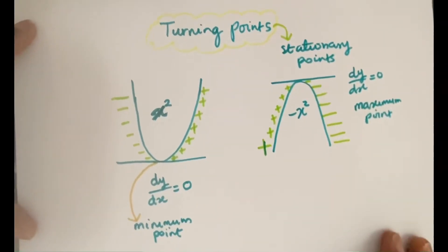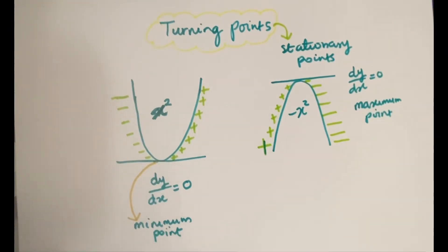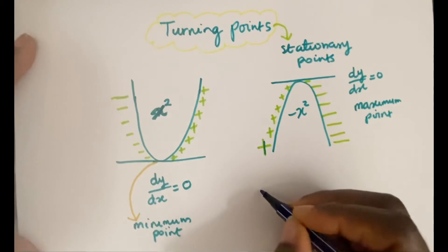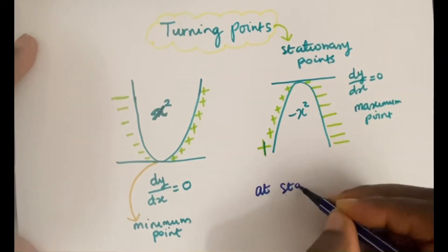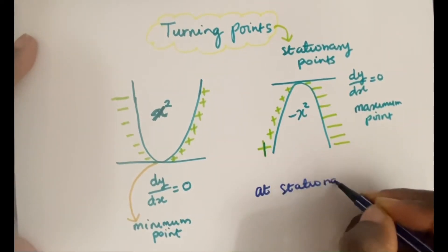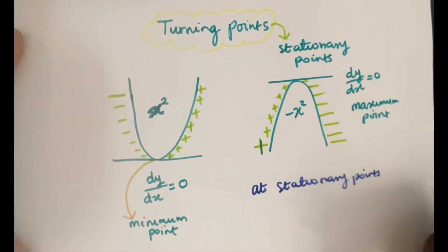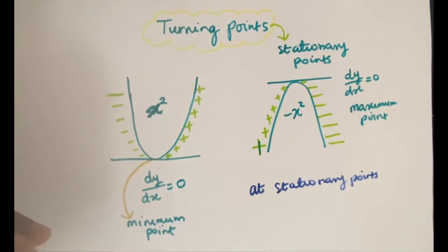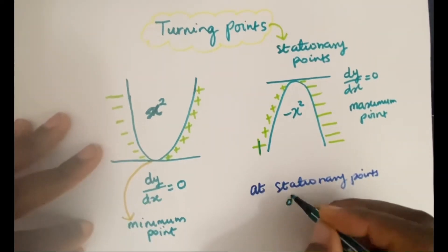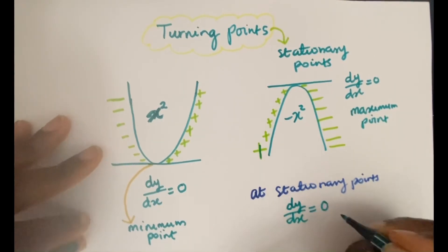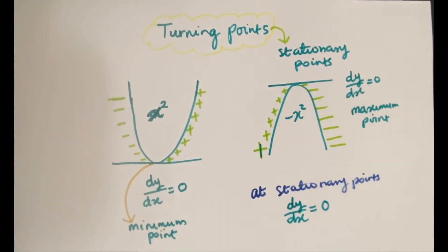So that's the basic information you need to know. The most important thing to take away to help you succeed in this lesson is that at stationary points, dy/dx is always equal to zero.